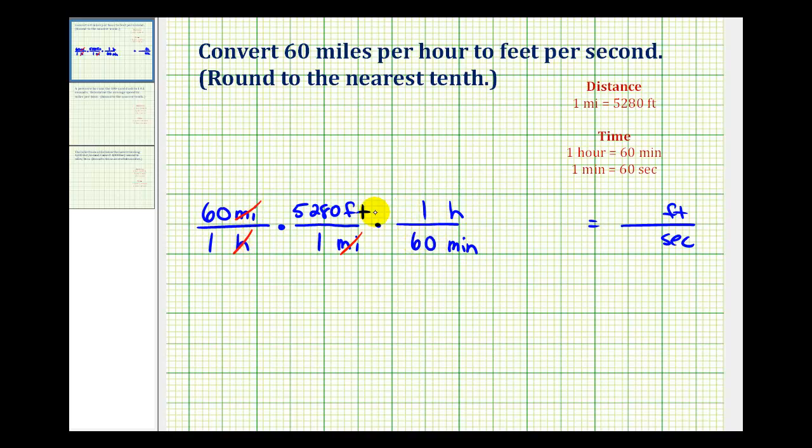Now we've converted hours into minutes but we still need seconds. So we'll multiply by one more unit fraction. We don't want minutes when we finish so we'll have minutes in the numerator and seconds in the denominator. And the conversion is 60 seconds is equal to one minute. And now the units of minutes simplifies out. So notice now we have the units of feet in the numerator and seconds in the denominator.